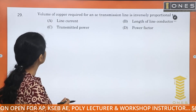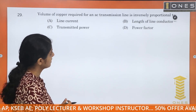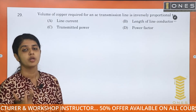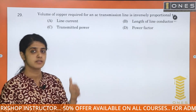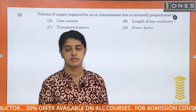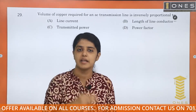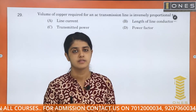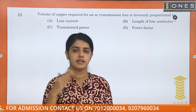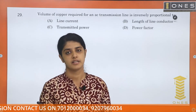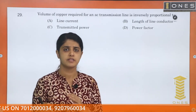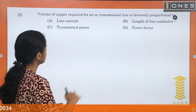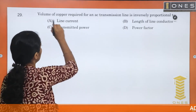The volume of copper required for an AC transmission line is inversely proportional to the volume of conductor. We have different cases in DC — two-wire system with midpoint — and in AC — single-phase, two-phase, and three-phase connections.